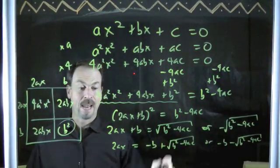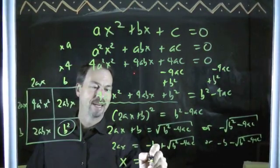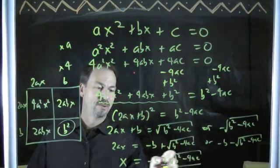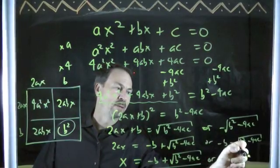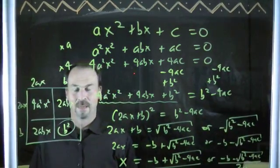2ax equals that. Let's divide through by 2a to get x, I get negative b plus the square root of b squared minus 4ac, all over 2a, or x is negative b minus the square root of b squared minus 4ac, all over 2a. And there we have it.